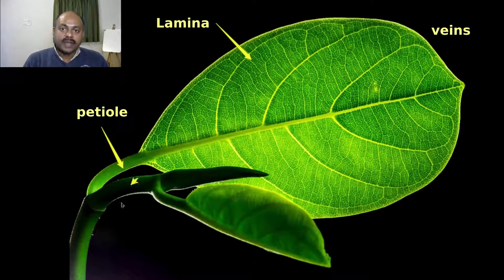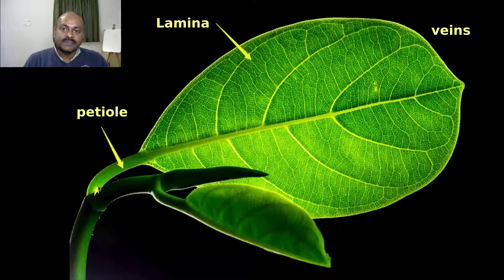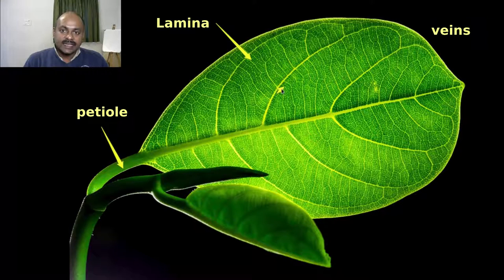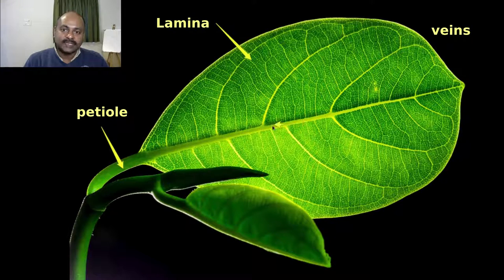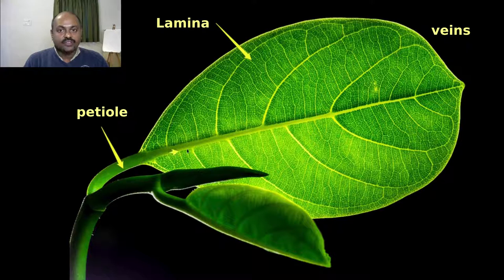They also conduct the water and the nutrients brought up by the stem to each and every cell in the leaf. The food produced by the leaf is taken back by these veins to the stem. This big vein running through the middle of the leaf is called the midrib.